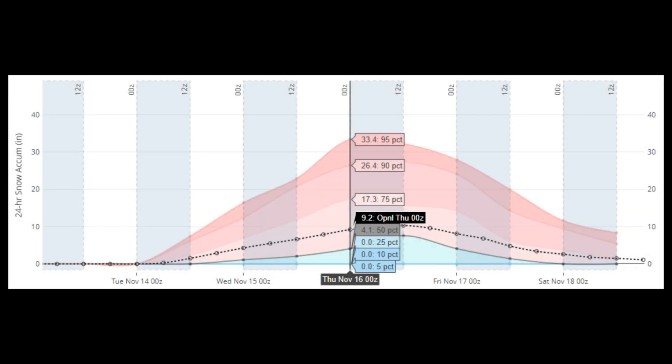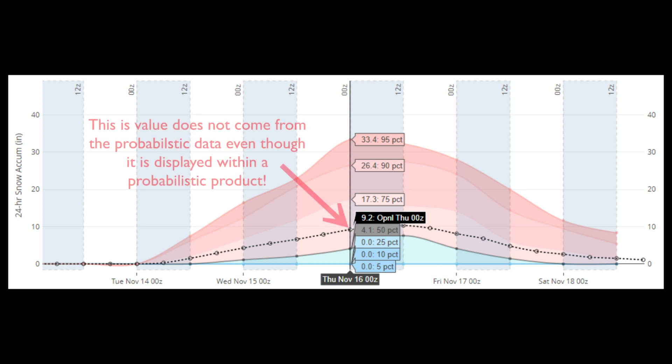The biggest takeaways are that the NBM deterministic or operational values seen in WASSUP, DESI, and the 1D viewers do not fall out of the probabilistic data. They are calculated differently.